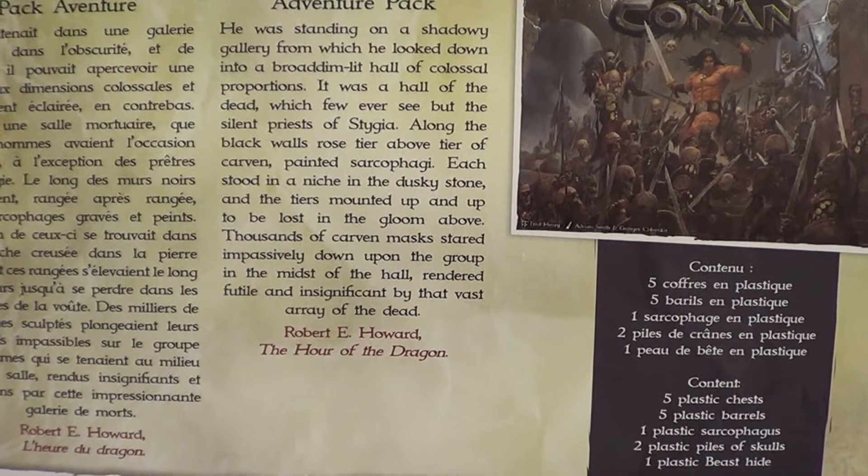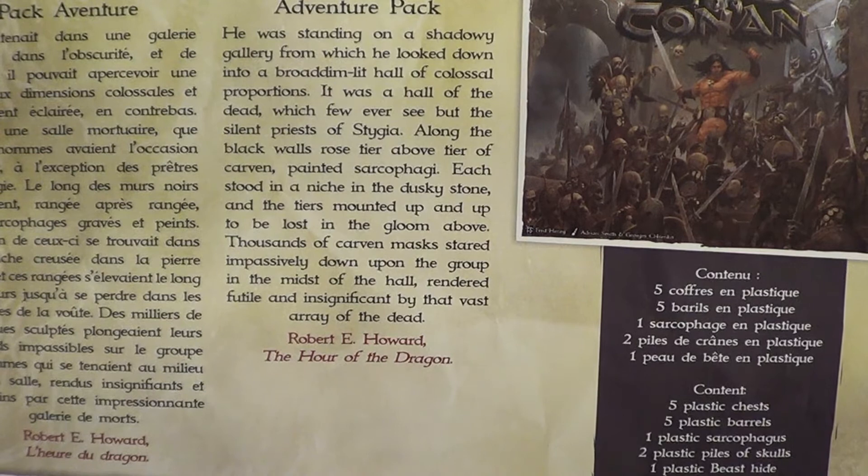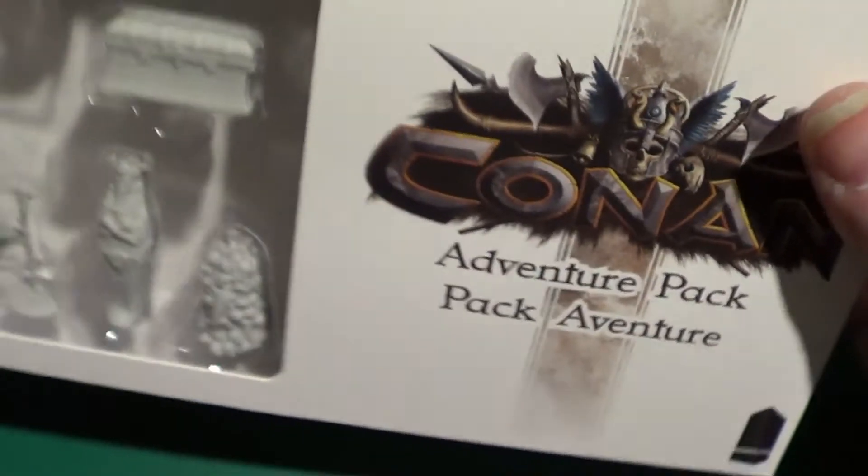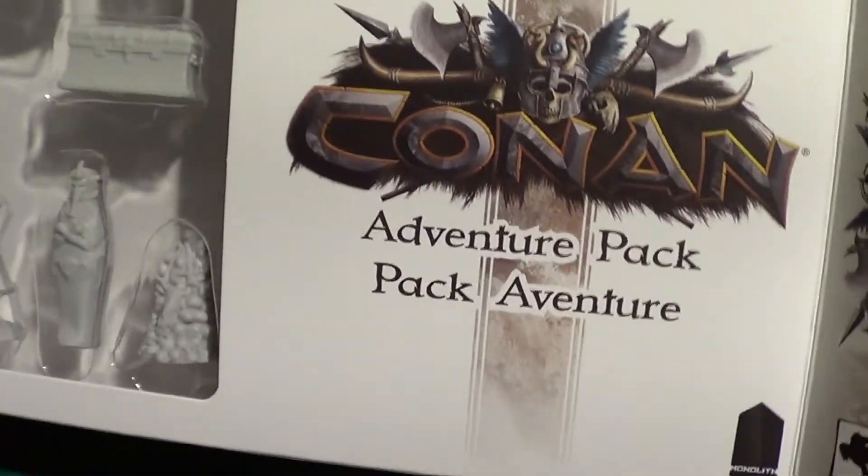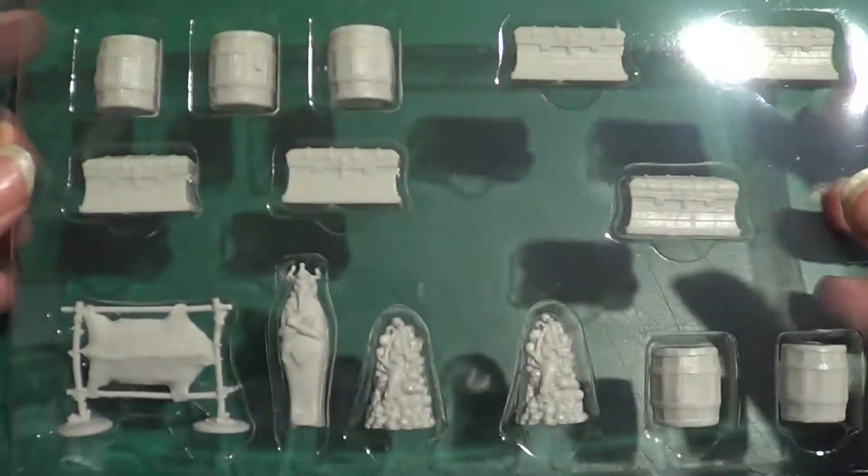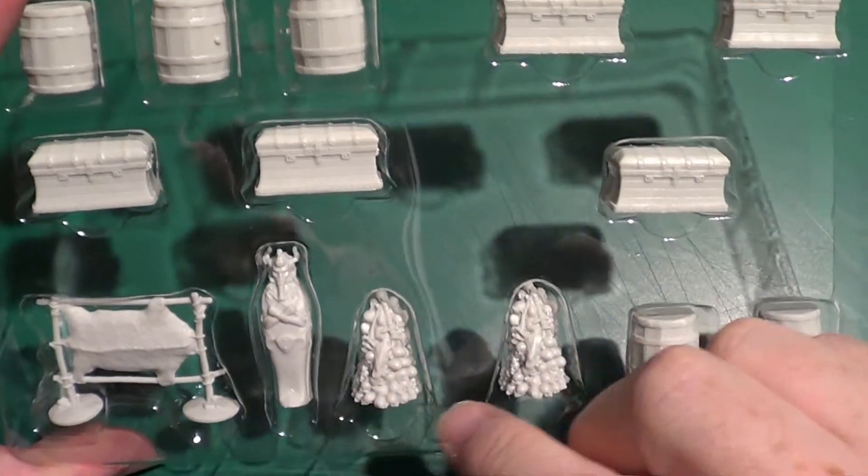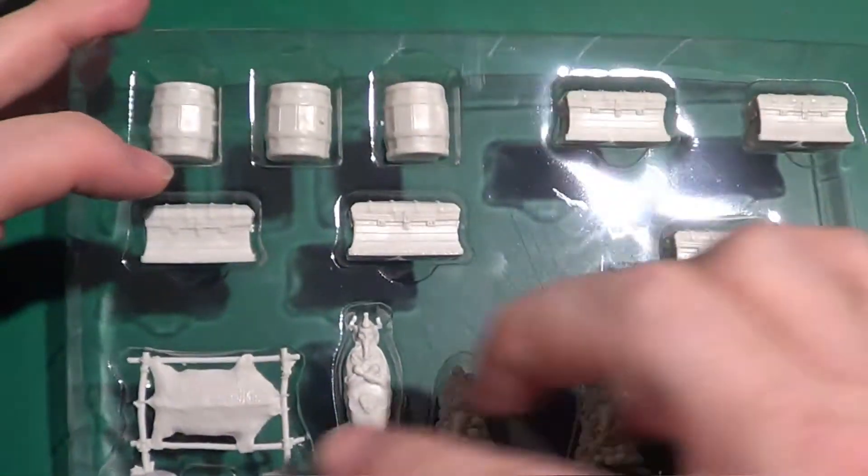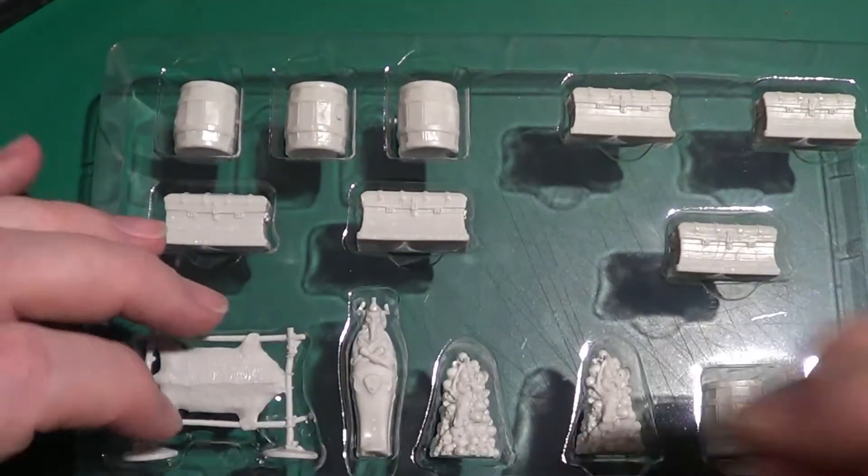One plastic sarcophagus, two plastic piles of skulls, and one plastic beast hide. We know we already have these in, well some of these actually, in the other, the bigger of the two boxes that we opened earlier. But we don't have all of these. We have the skull piles. We have the sarcophagus. And we have these treasure chests. We don't have the barrels and we don't have that. So we've seen those already. Let's have a look at the things that we haven't seen.